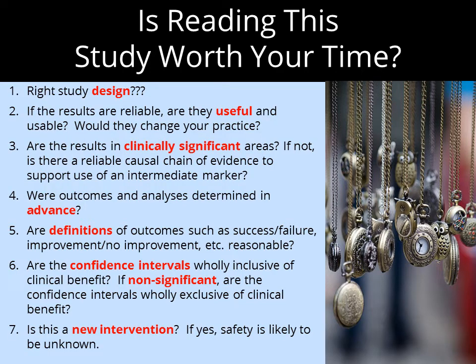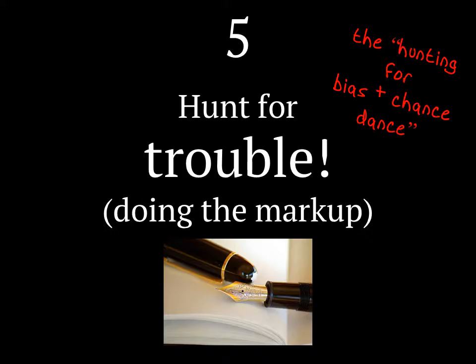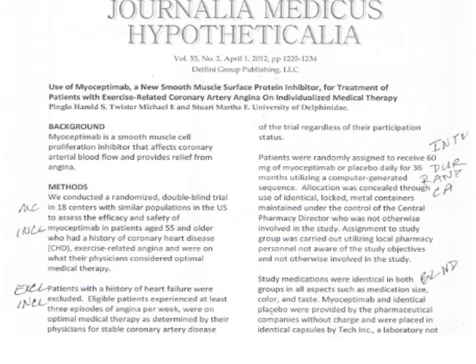At the top of the learner's tool we had you download is a quick assessment. Here are some questions you can use to determine whether you want to actually spend time looking at a study. If the study is worth your time, you want to now hunt for bias and chance. What Mike and I do is take our medical research study and all the little codes we have in our head for important elements to consider, and start marking up the study with those abbreviations.